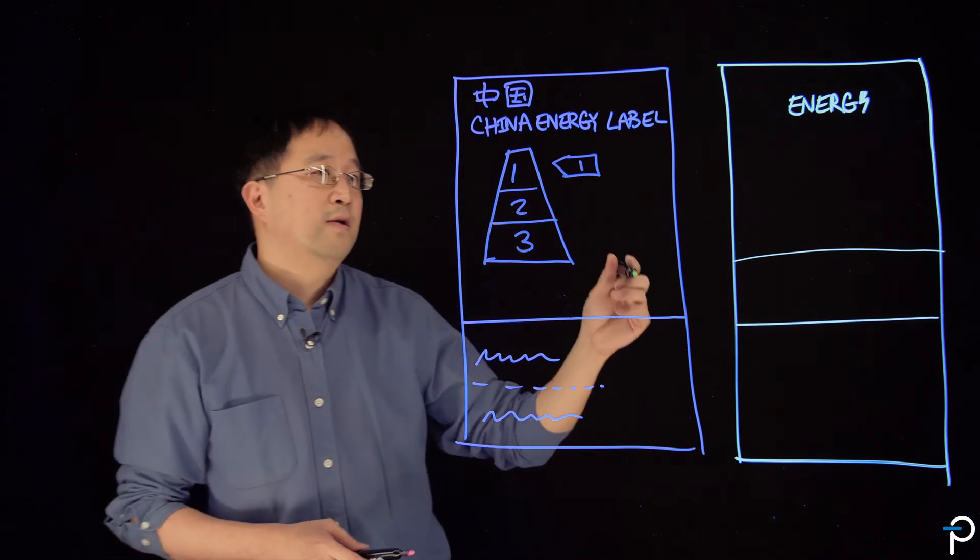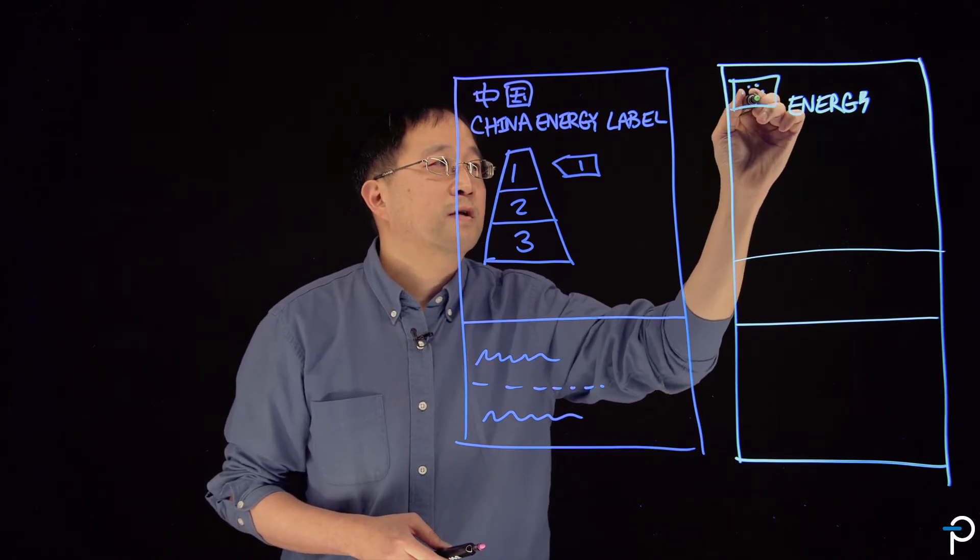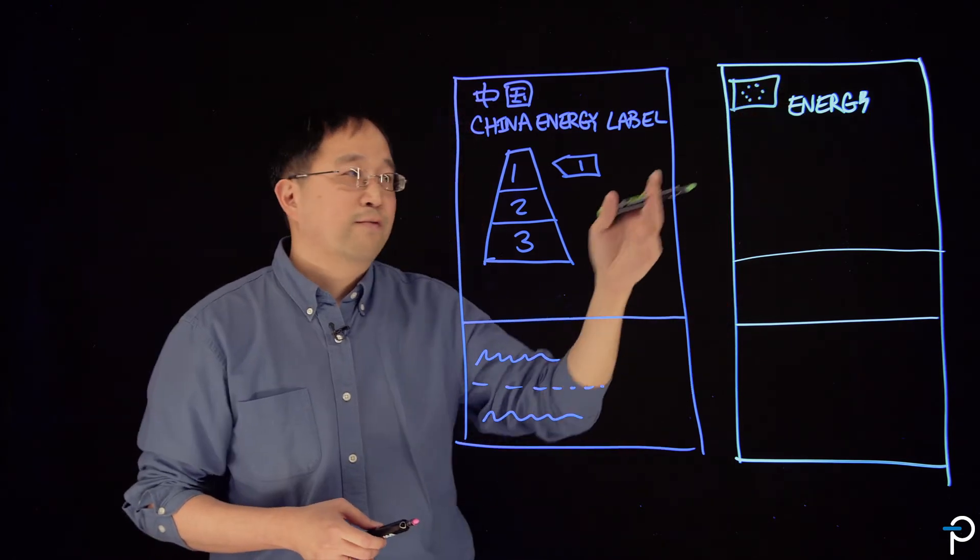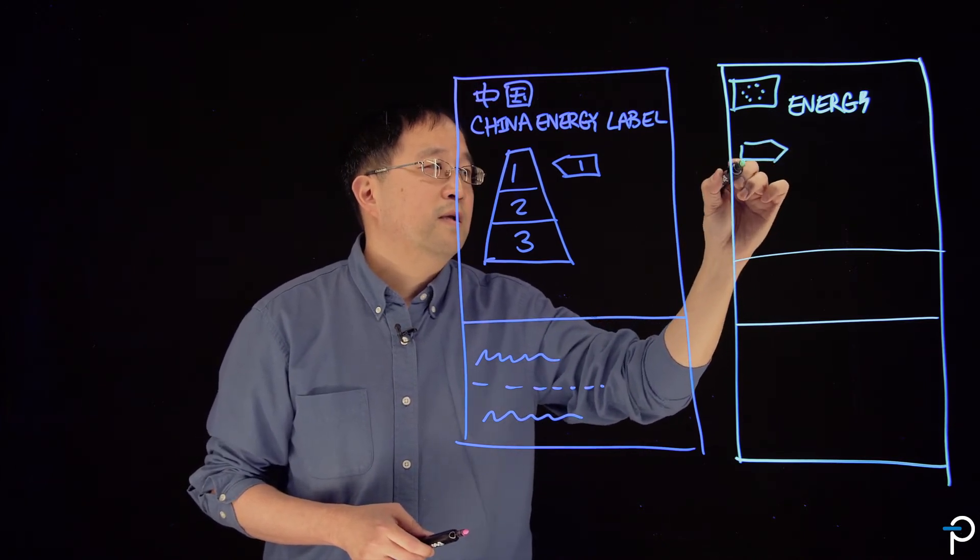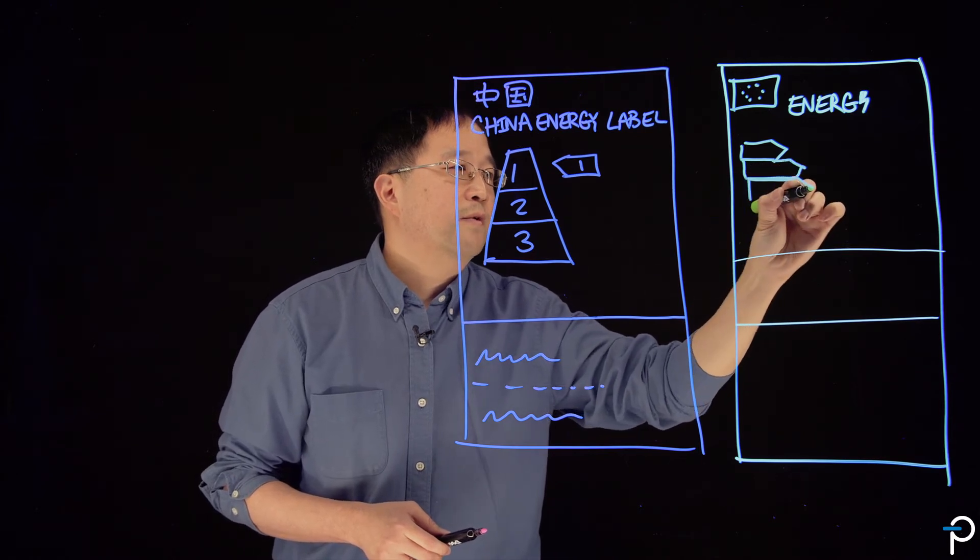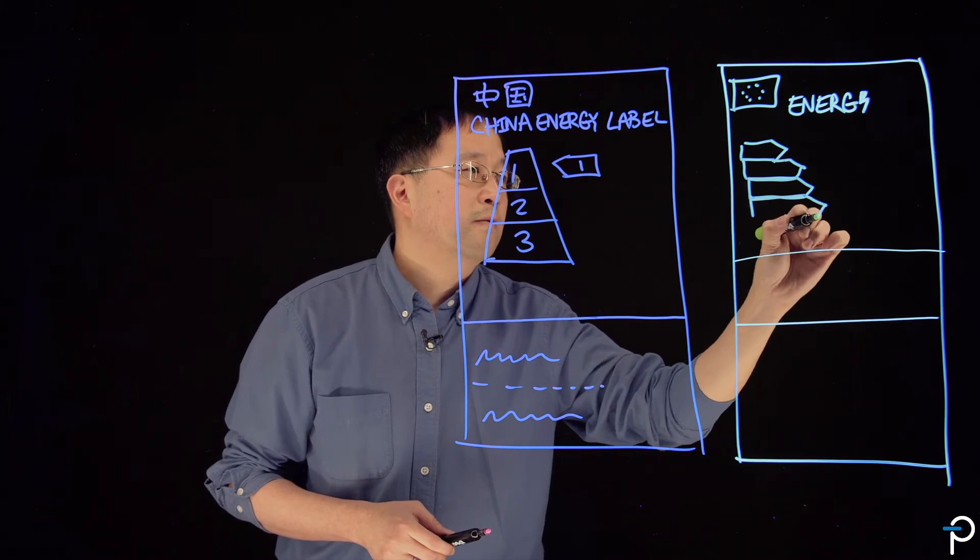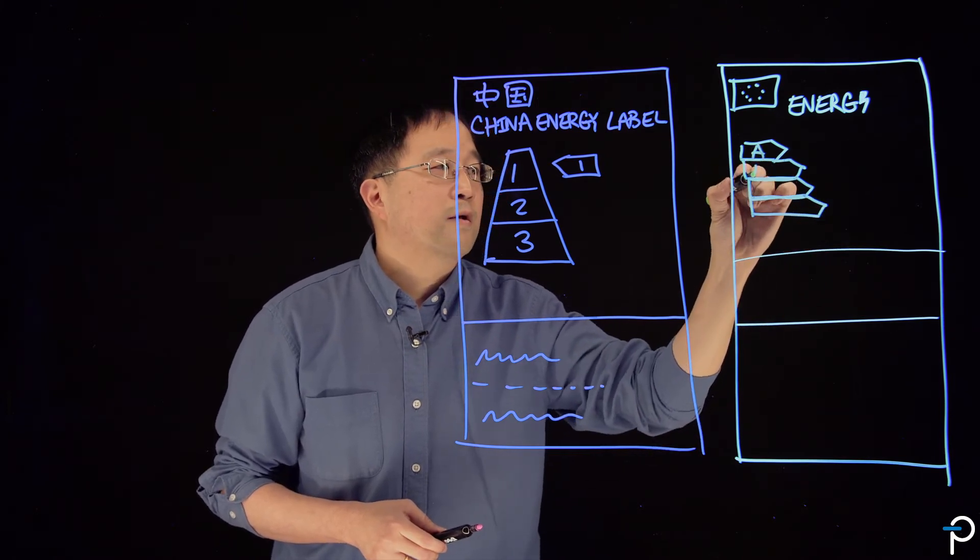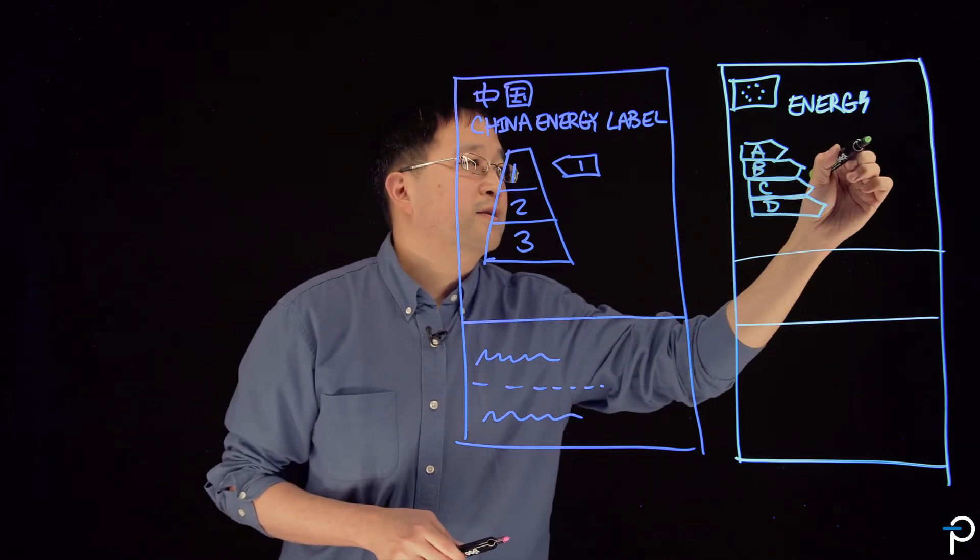Very similarly, in Europe, where there is a flag for the European Union, there, instead of a pyramid, is a set of grades that range from A, B, C, D, with A being the highest performing product.